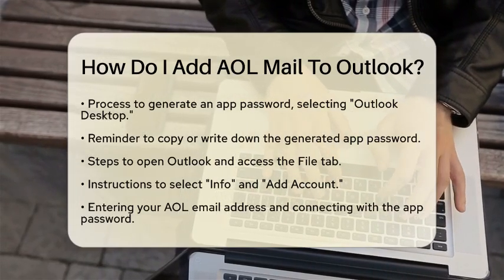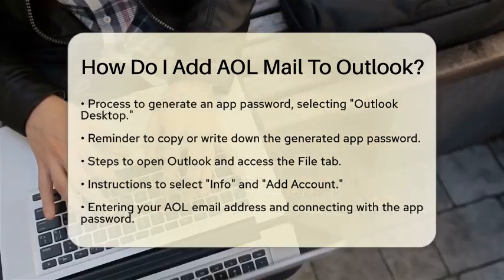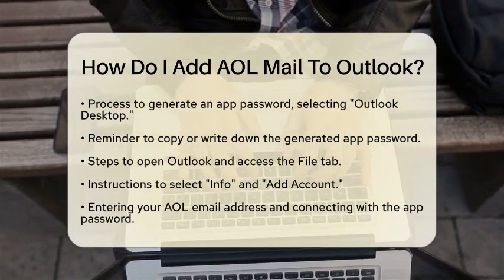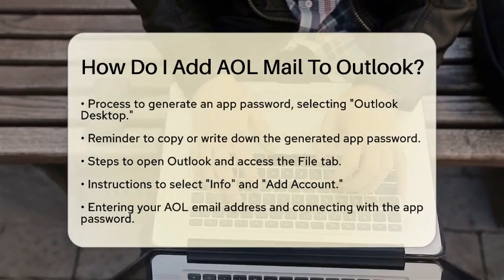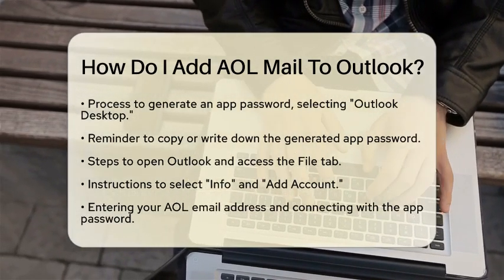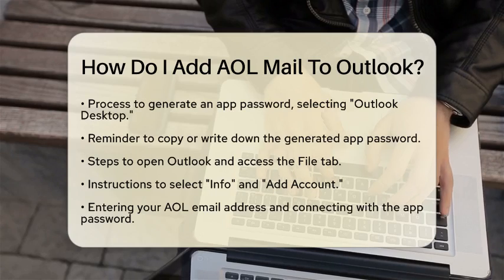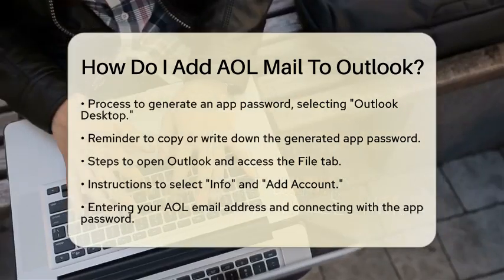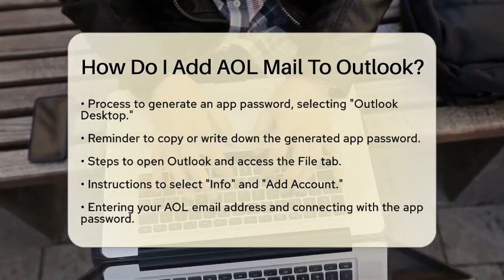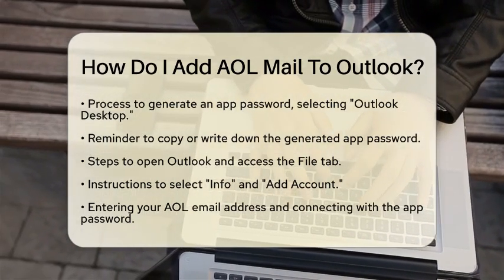Next, open Outlook on your computer. Click on the File tab located at the top left corner. Then select Info and click on Add Account. Enter your AOL email address and click Connect. Now enter the app password you generated earlier and click Connect again. When prompted, choose IMAP as the account type and click Done.